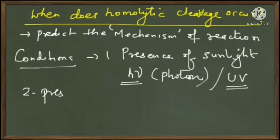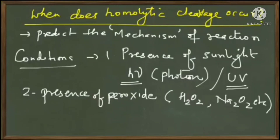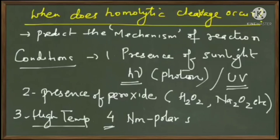The second condition is the presence of a peroxide — for example H₂O₂ or Na₂O₂. If such species are present in the reaction, it will proceed by homolytic cleavage. The third condition is high temperature. If there is very high temperature, it favors the formation of free radicals.